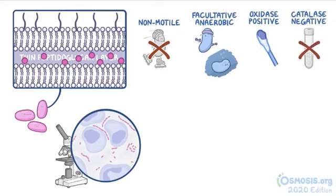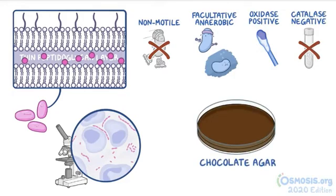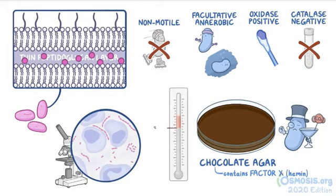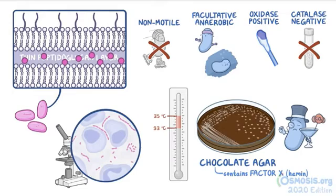Finally, Haemophilus ducreyi can be cultivated on chocolate agar because this medium contains essential nutrients it needs to grow, like factor X, also called haemin. They are fastidious bacteria that only grow in a CO2 environment, at a temperature between 33 and 35 degrees Celsius, and it forms small, gray, or translucent colonies.